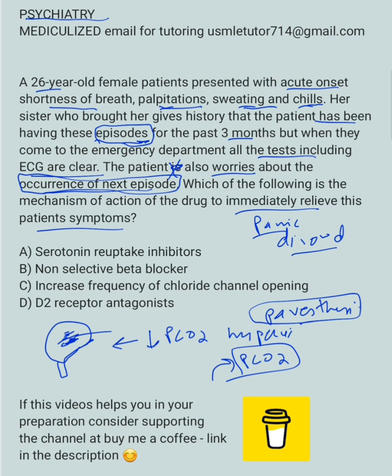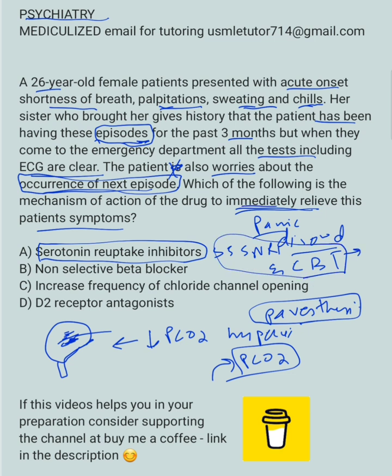Let's see which drug is going to be used here to immediately relieve this patient's symptoms — remember, there are active symptoms. So you need to give a benzodiazepine. The answer choices include serotonin reuptake inhibitors — SSRIs and SNRIs — and cognitive behavioral therapy. These are treatment options for panic disorder, but they are for maintenance, not to relieve immediate symptoms. Here, we need to immediately relieve the patient's symptoms, so these are not the ideal choice.